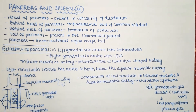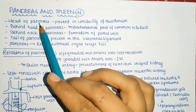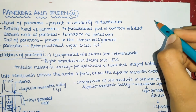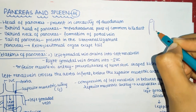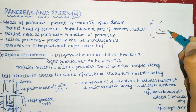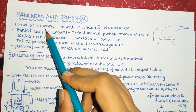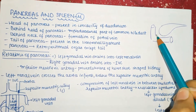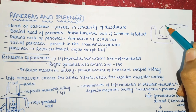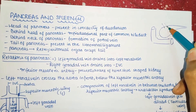In this video we are going to discuss the pancreas and spleen. The head of the pancreas is present in the concavity of the duodenum. Behind the head of pancreas there is the infraduodenal part of the common bile duct.